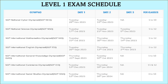Let's first see the Level 1 exam schedule. Schools may select one date for conducting an Olympiad exam in their schools. Change of a further date is not permitted. There are separate question papers for different dates, meaning a school may either choose Date 1, Date 2, or Date 3 for a particular Olympiad exam.